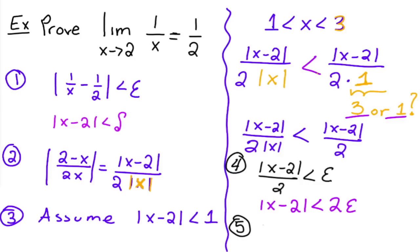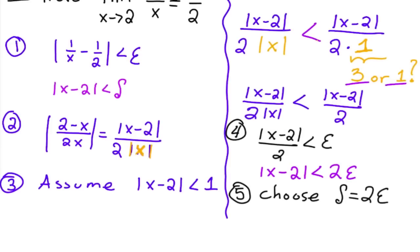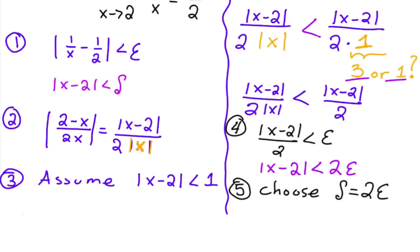Once we do that, then we can choose delta to equal 2 times epsilon. And if we choose delta to equal 2 times epsilon,